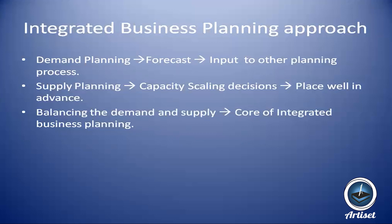As a result, customers are disappointed. If demand is very low and supply planning prepared more quantities, it's a financial loss for the company. The key is balancing demand and supply — this is the main core of integrated business planning. The solution is to integrate both with the same set of data, so whatever comes as demand goes directly to supply, and the data is in sync in real time.